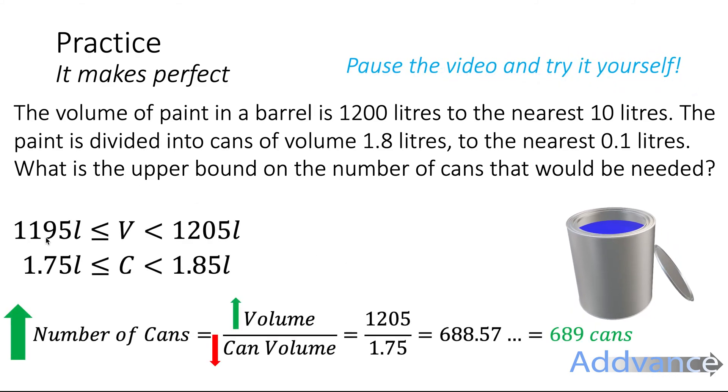The volume could be between 1,195 litres to 1,205 litres. The cans could be of volume 1.75 to 1.85 litres. To get a big number of cans, you need a big volume divided by a small can volume. You would get 1,205 divided by 1.75, which is 688.57. But because we need a full can, that is 689 cans. That is the final answer.